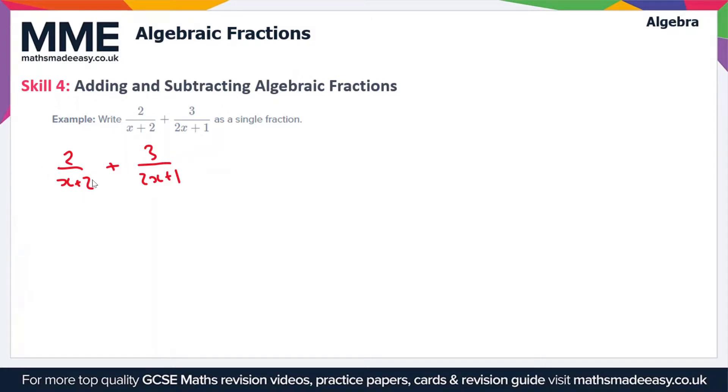So this is going to give us 2 times 2x plus 1 over x plus 2 times 2x plus 1. So that's our first fraction on the left multiplied top and bottom by 2x plus 1, and then we're adding 3 times x plus 2 over 2x plus 1 times x plus 2. So these are our two fractions. We have a common denominator now of x plus 2 times 2x plus 1.